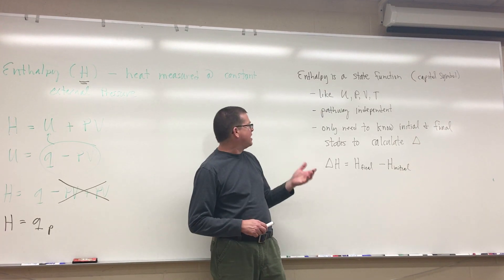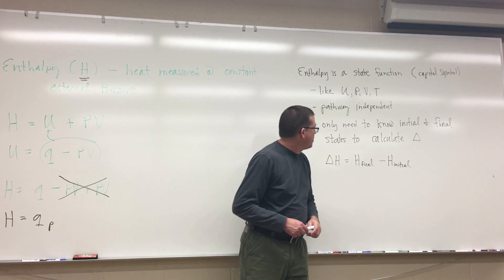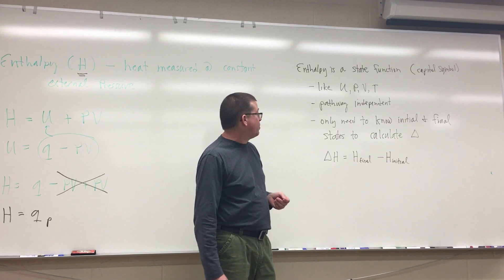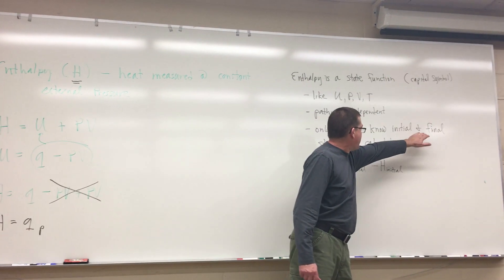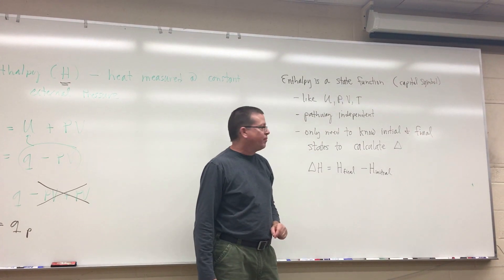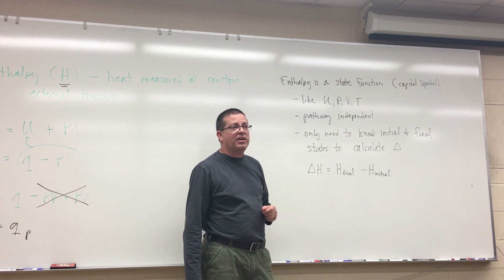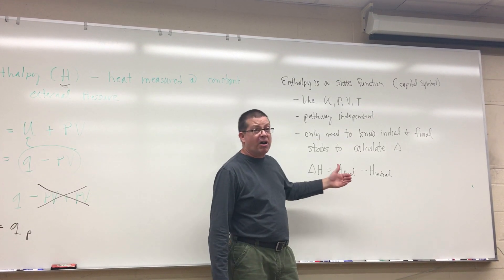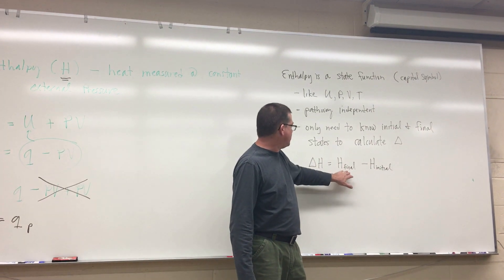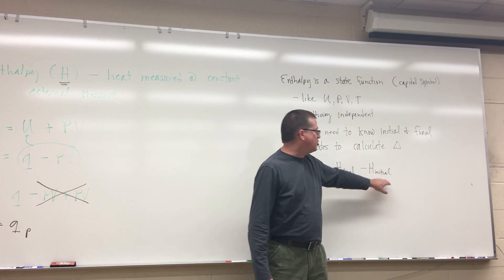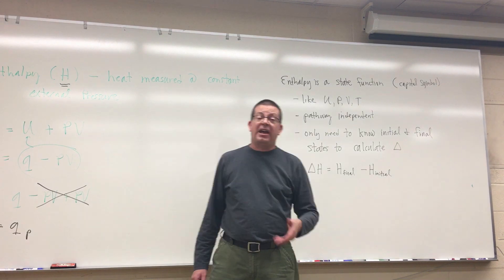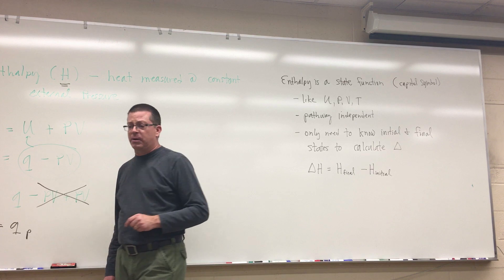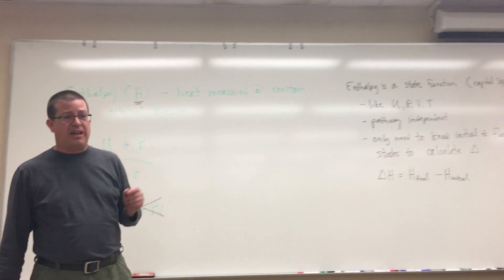So the nice thing about a state function like enthalpy is that all I really need to know to calculate an enthalpy is an initial enthalpy and a final enthalpy. That's all we need to know to calculate the difference. So a delta enthalpy is just going to be, for a given process, the difference between the final enthalpy and the initial enthalpy. We've calculated volumes that way and also temperatures that way. So in just a moment we're going to talk a little bit more about the properties of enthalpy.